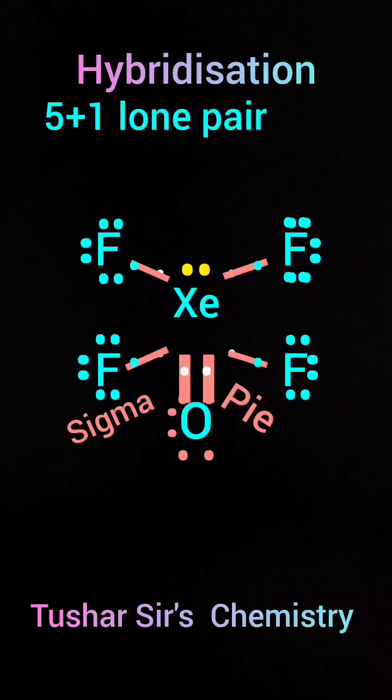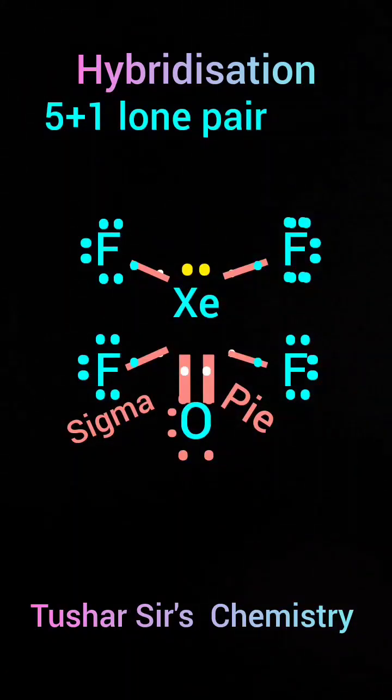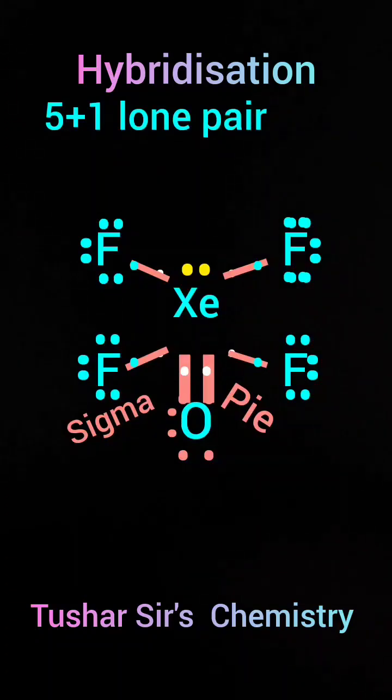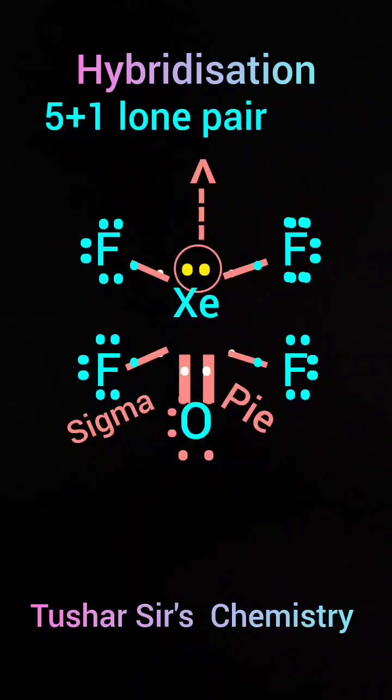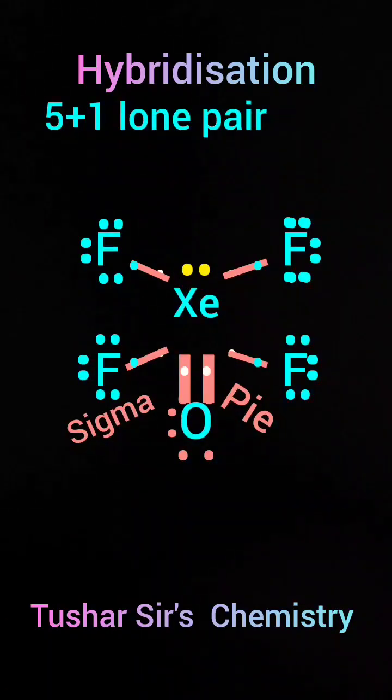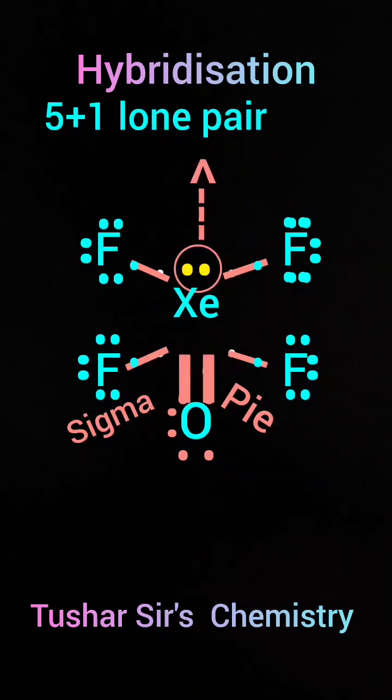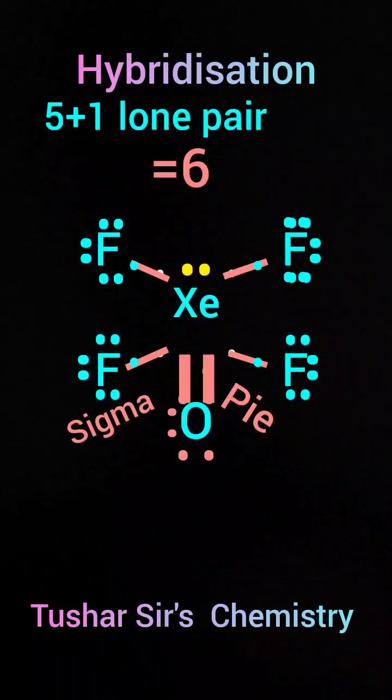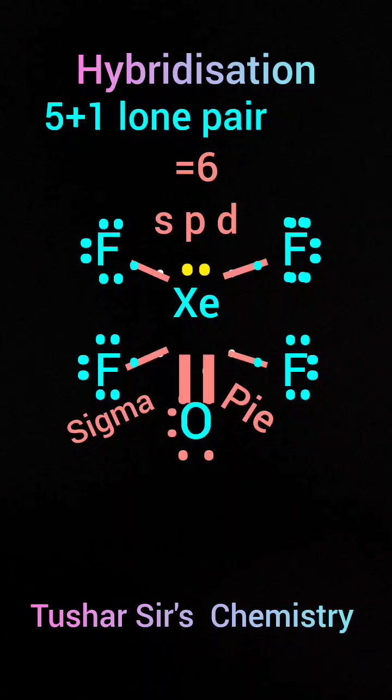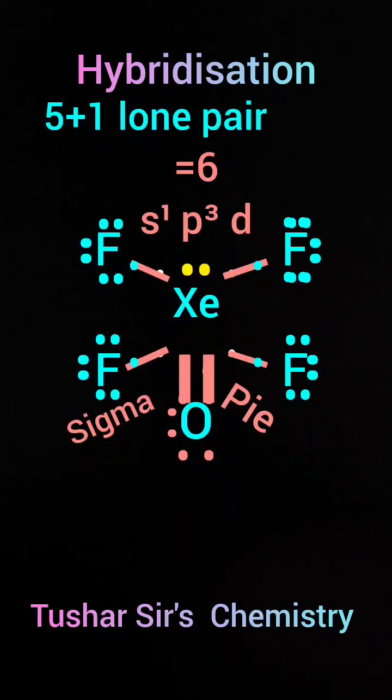Here number of lone pairs is equal to one. Number of sigma bonds, five. Number of coordinate bonds, zero. So total number of pairs is equal to 5 plus 1 plus 1 lone pair, which is equal to six. So below six you write sp3d2.